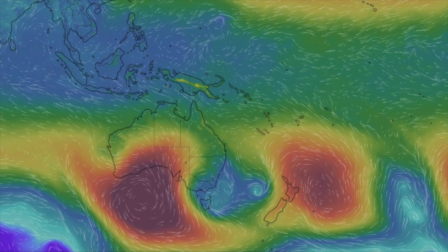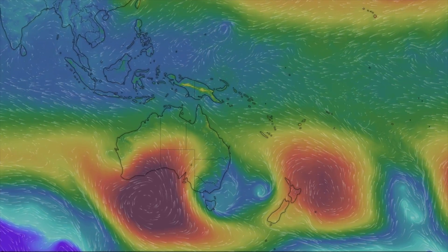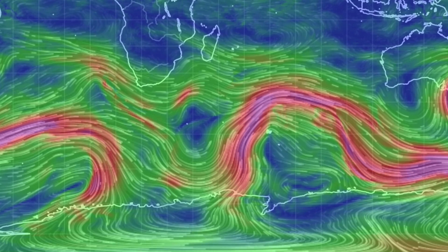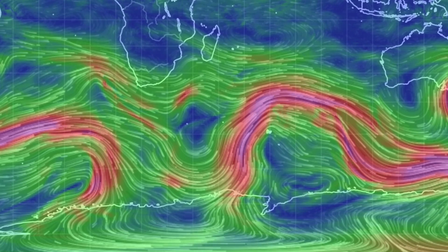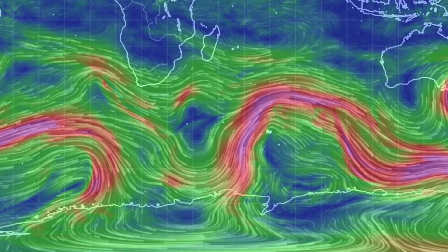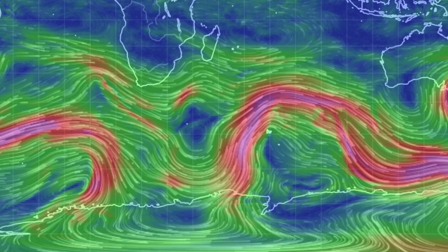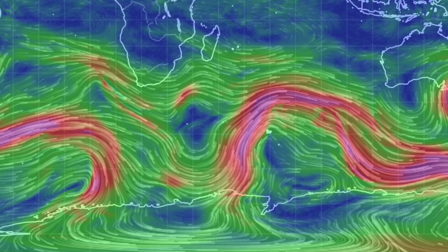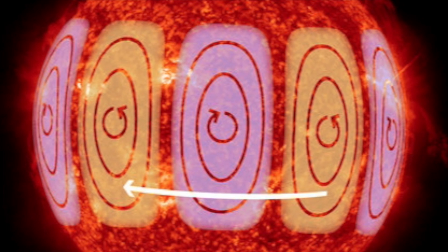On Earth, those tend to follow an upper-level pattern that often produces Rossby waves that are tremendously influential in terms of modification of short-term weather. Coming back to the Sun, this new study identified those Rossby waves associated with the large cells of circulation, and that they were highly controlling of the short-term weather on the Sun.